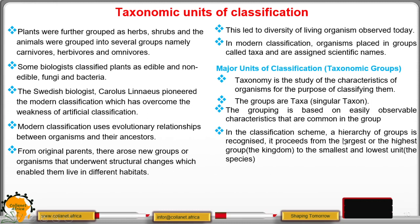In the classification scheme, a hierarchy of groups is recognized because it proceeds from the largest or highest group — the kingdom — to the smallest and lowest unit, which is the species. Remember, the kingdom will always have the highest number of organisms, and the species will hold the least number of organisms.